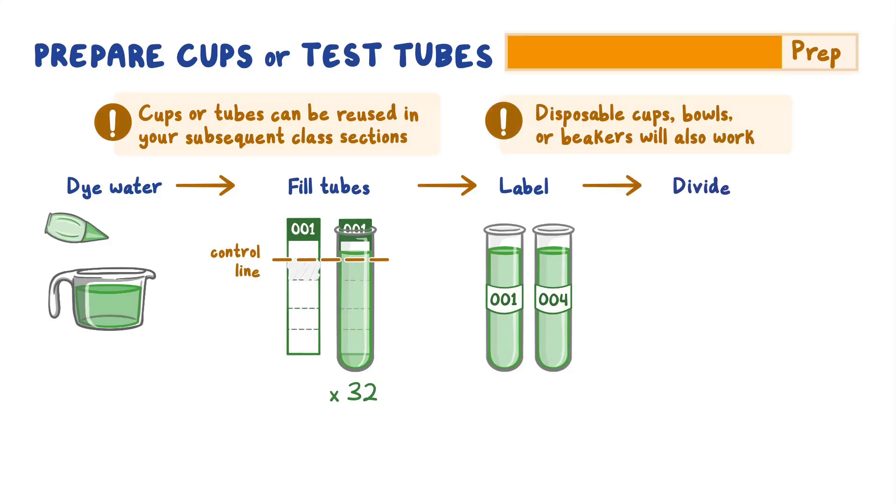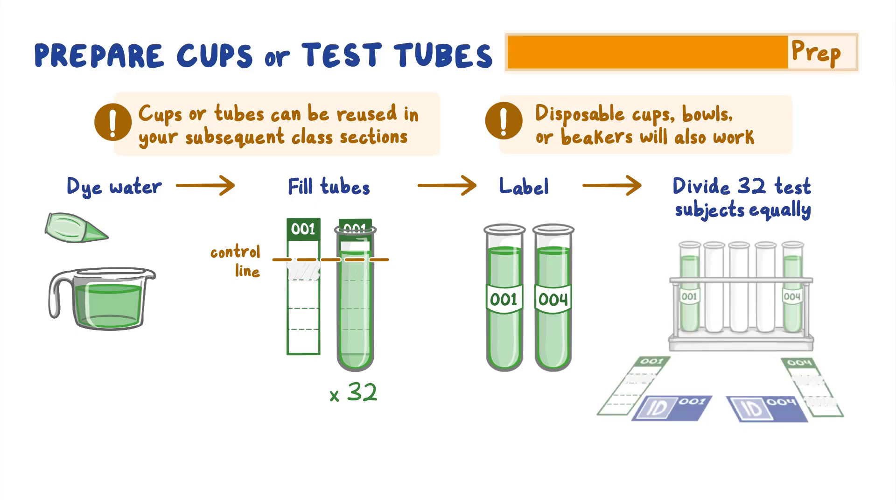Then divide the 32 test subjects equally among the stations. For each test subject, include their matching antigen test strip, sample cup or test tube, and test subject identification card.